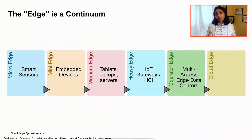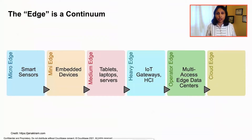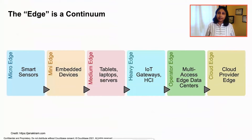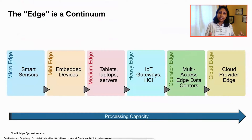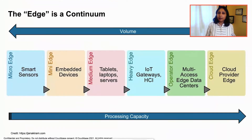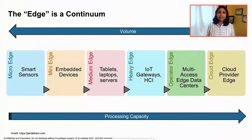You can also deploy your data center at the edge of a mobile operator network. This is typically referred to as MECs, or multi-access edge computing centers. Finally, you can deploy a data center or micro data center at the edge of a cloud provider network. When you look at this in one dimension, data storage and compute capability increases as you progress from the micro edge all the way to the cloud edge, but volume decreases — the number of micro edges is several orders of magnitude greater than the number of cloud data centers.